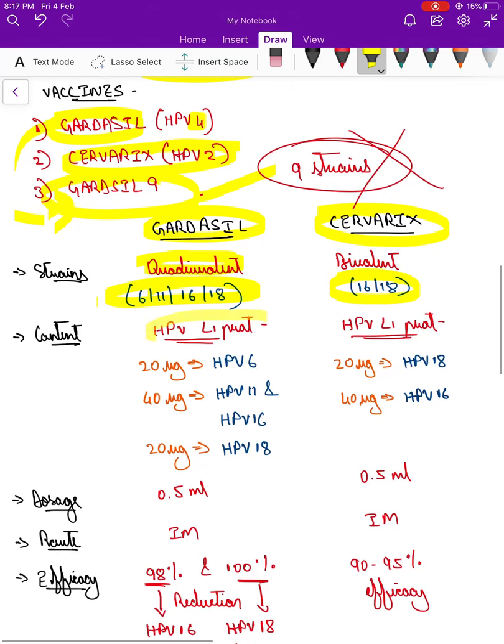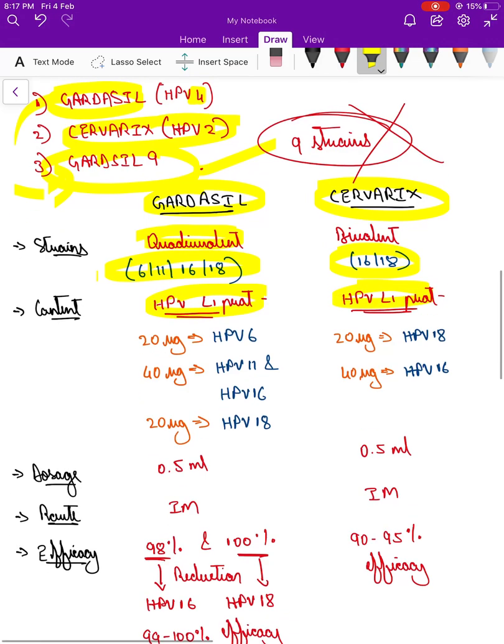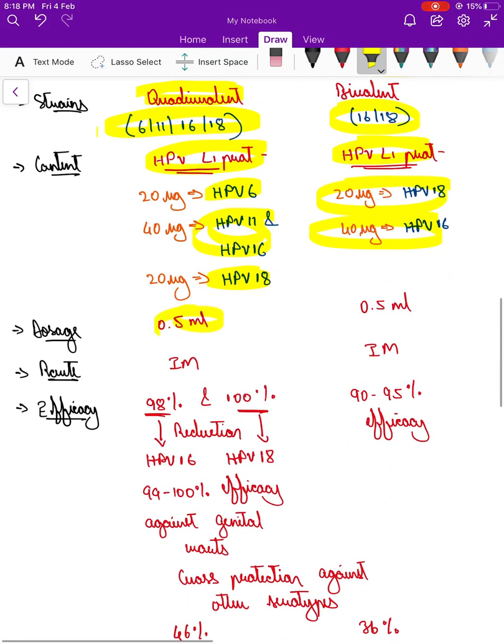Both of them, content is the same: subunit vaccine against HPV L1 protein. There is 20 micrograms of HPV 6 and HPV 18, and there is 40 micrograms of HPV 11 and 16. Coming to Servarix, since it contains only 16 and 18: 40 micrograms of 16 and 20 micrograms of 18. Dosage is 0.5 ml, same for both. Route is intramuscular.